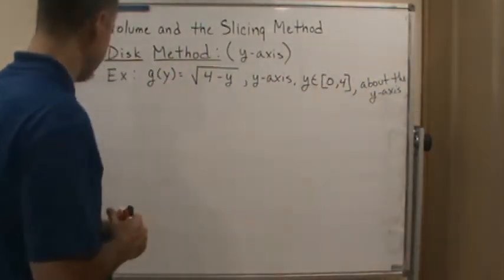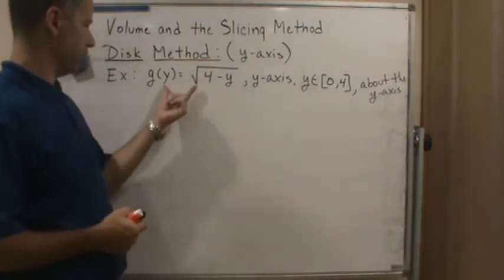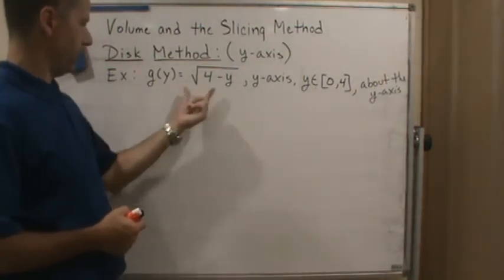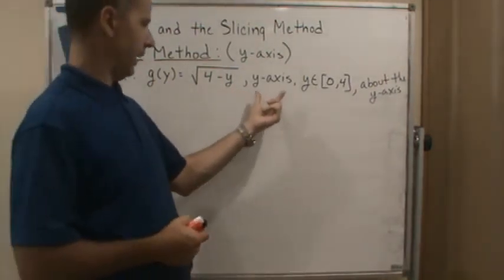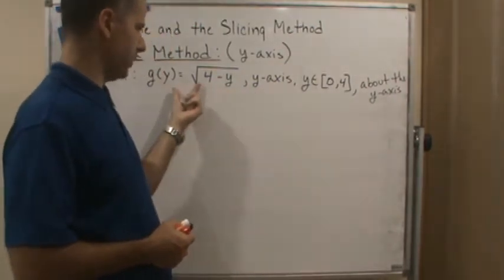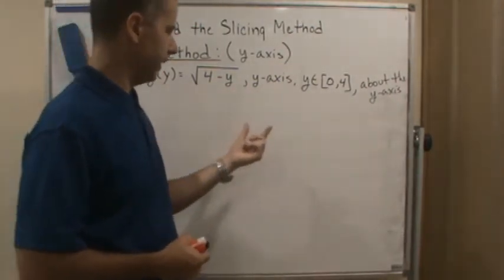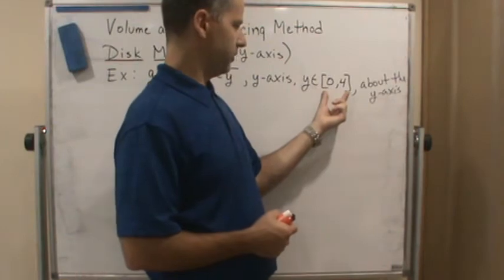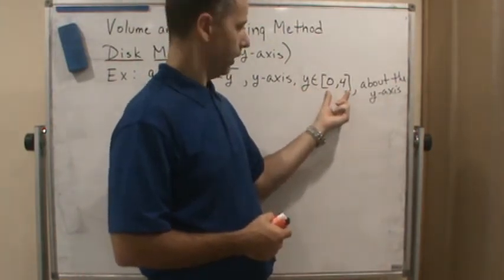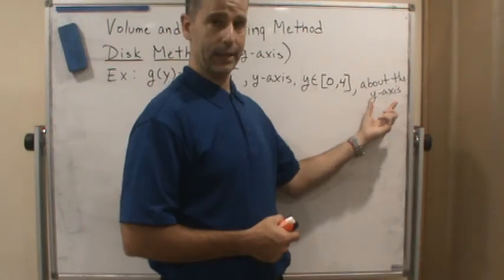And so in this example, we want to use the region that's bounded by g of y equal to this and the y-axis. So we want the region between these two and the region that's between 0 and 4, y equals 0 and y equals 4. And we're going to rotate it about the y-axis.